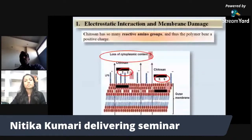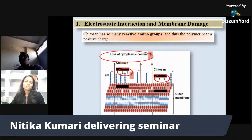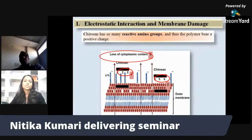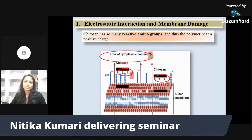Under direct toxicity, the first mode of action is electrostatic interaction and membrane damage. Chitosan is a polycationic compound due to various reactive amino groups, and it bears a positive charge. When the positively charged Chitosan interacts with the negatively charged surface of the pathogen, various interactions take place, leading to changes in the pathogen's surface. This causes leakage of intracellular components out of the cell membrane, leading to the death of the pathogen.